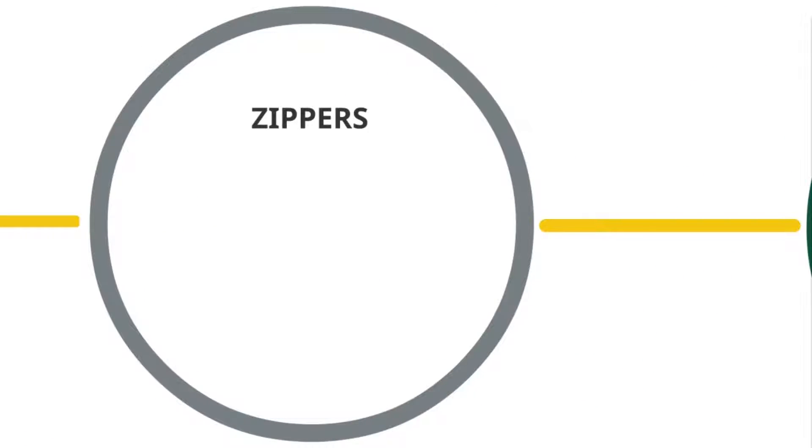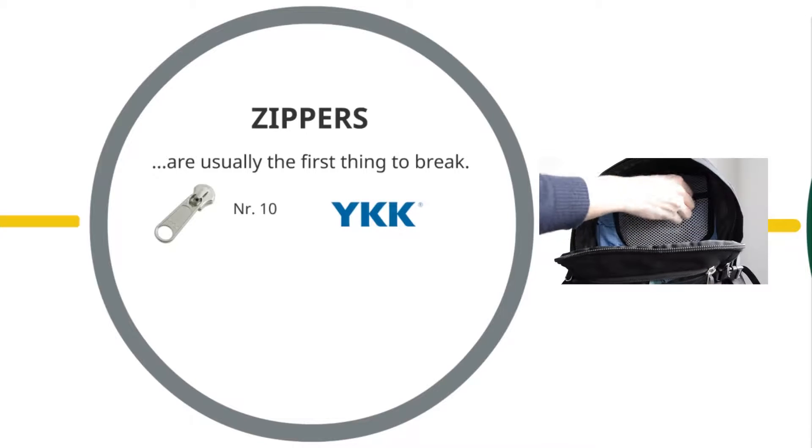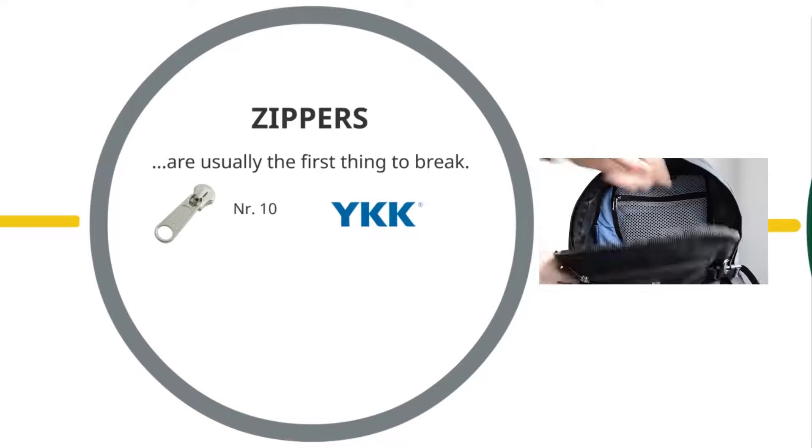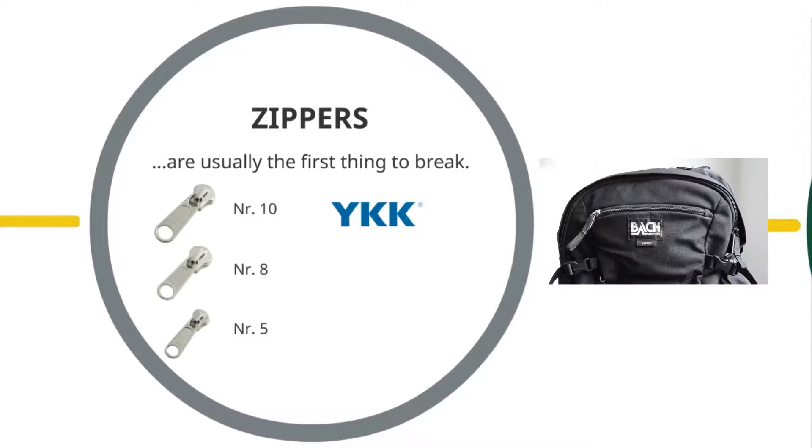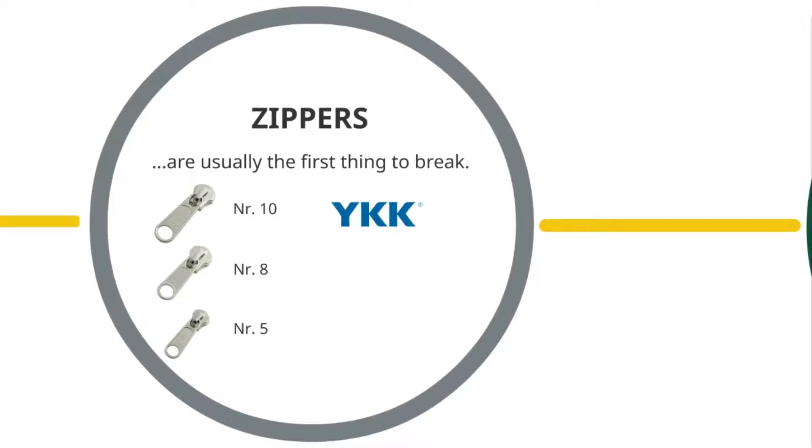Zippers are usually the first thing to break, but not in our case. Wherever applicable we use number 10 zippers from YKK. If not really needed we also go for smaller sizes.